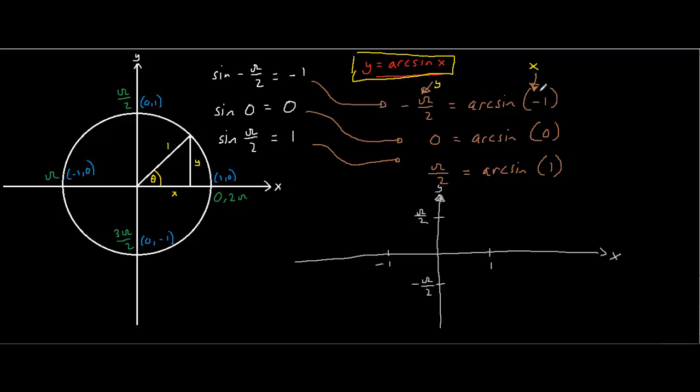Now when x is minus 1, y is minus pi over 2. So we'll put a dot here.